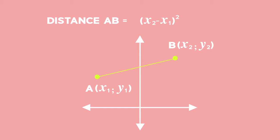Then we find the difference between the y values and square this. Add the squared values together and find the square root of your answer.